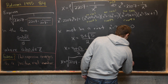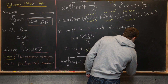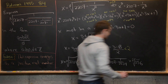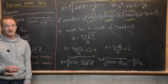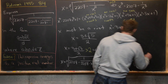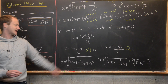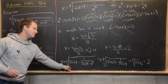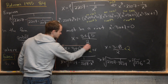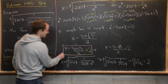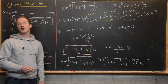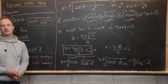Since x is bigger than 2, we must take the larger root. Therefore our answer is x equals (3 + √5) / 2, and that's a good place to stop.